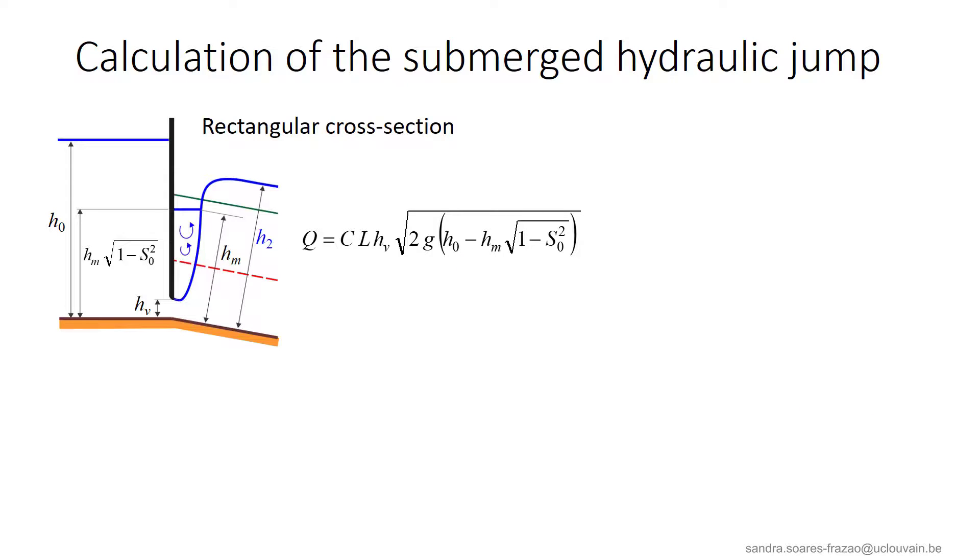The discharge depends on HM, but HM depends on the discharge and on H2. And H2 is the upstream end of a subcritical water profile that depends on the downstream level and on the discharge. So the three variables are linked by a series of equations that cannot be solved straightforward. Therefore, a trial and error process will be used.